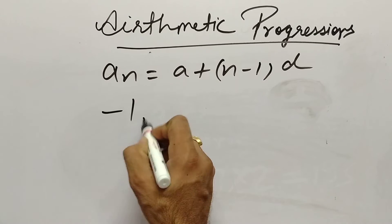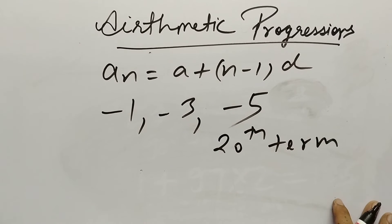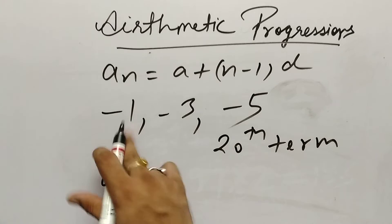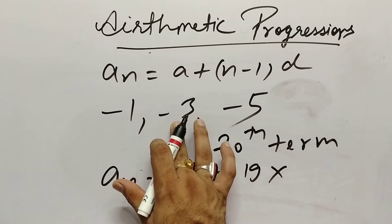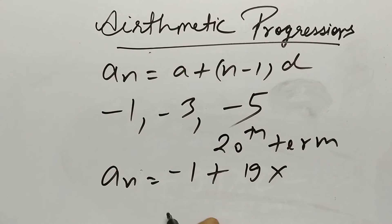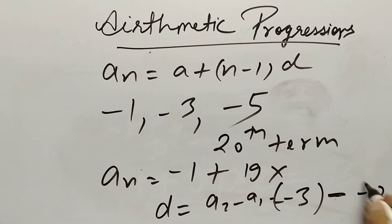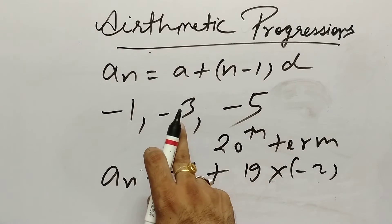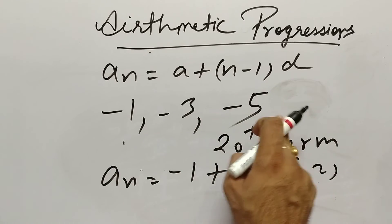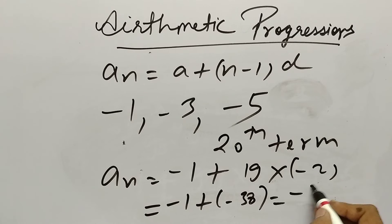Next example: the AP is -1, -3, -5, ... find the 20th term. Simply, aₙ equals a plus (n minus 1) into d. a equals -1, n equals 20, so (20 minus 1) equals 19 into d. D equals a2 minus a1: -3 minus (-1) equals -3 plus 1 equals -2. So d equals -2. Then 19 into -2 is -38, and -38 plus (-1) gives -39. The 20th term is -39.